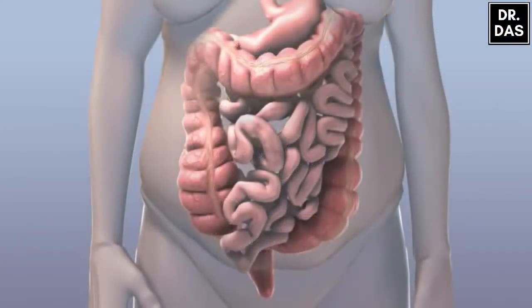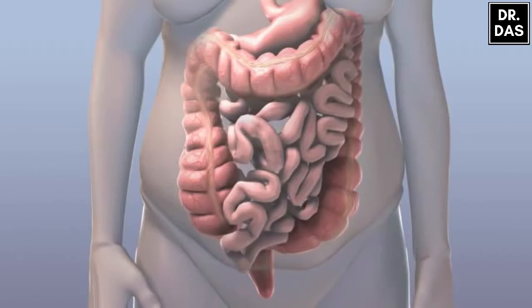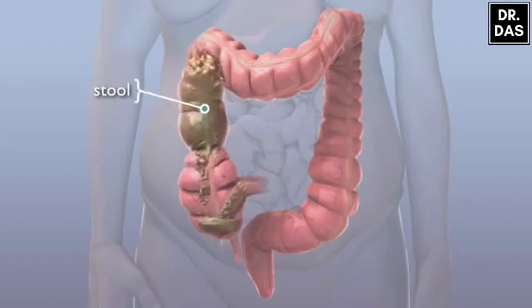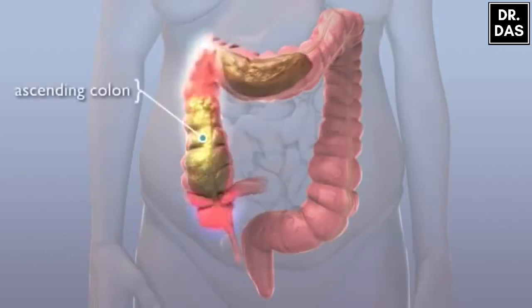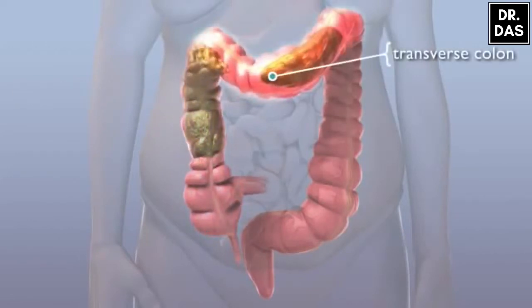The final stages of food digestion take place in the large intestine, or colon. After nourishment is extracted from what we eat, the leftover waste material mixed with water flows from the small intestine into the colon. After entering the colon, stool loses water as it travels upward through the ascending colon and across the belly through the transverse colon.